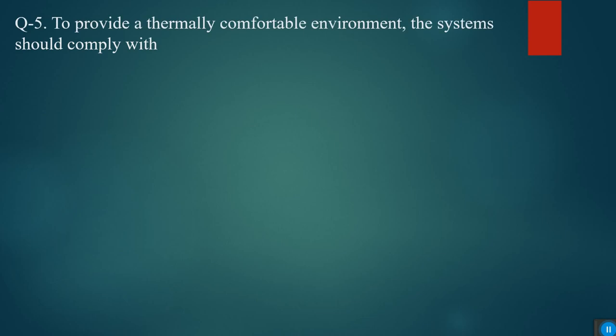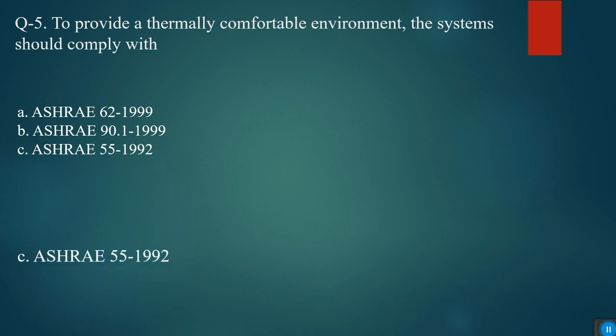To provide a thermally comfortable environment, the system should comply with ASHRAE 62.1-1999, ASHRAE 90.1, or ASHRAE 55-1992. We know the answer is ASHRAE 55-1992 for thermal comfortable environment.